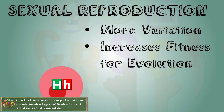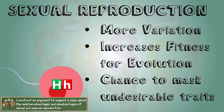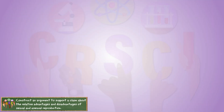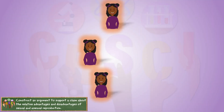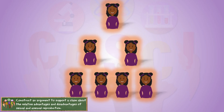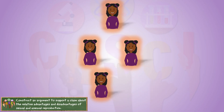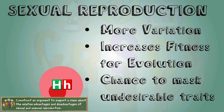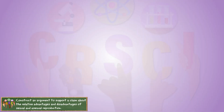Sexual reproduction brings about more genetic variation. It allows desirable traits to mask undesirable traits, which increases fitness for evolution. In your sister's case, if she could only reproduce asexually her entire legacy is destined to have sickle cell anemia, whereas with sexual reproduction, depending on the mate she chooses, the chances of that being passed down could decrease and eventually be wiped out.